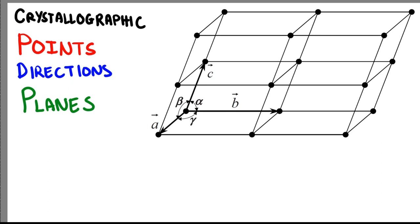Labeling conventions have already been established in which three numbers, or indices, are used to designate point locations, directions, and planes. The basis for determining the index values in the unit cell depends on a right-handed coordinate system consisting of three axes situated at one of the corners of our unit cell, as shown in the figure. These axes are A, B, and C. For unit cells where the axes are not mutually perpendicular, the indices follow the A, B, and C directions rather than the traditional x, y, z coordinate system. Take note of this when dealing with crystal systems such as hexagonal, rhombohedral, monoclinic, and triclinic systems.